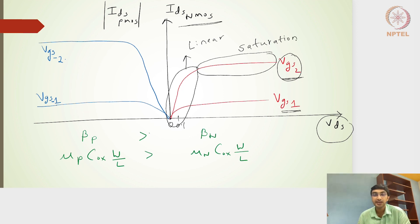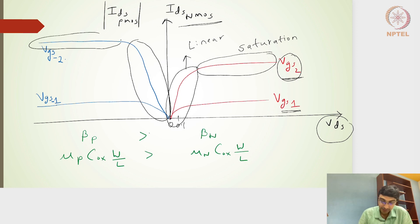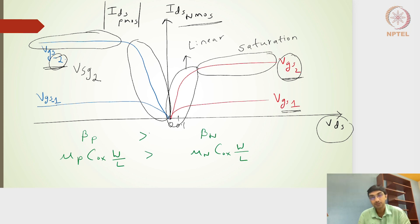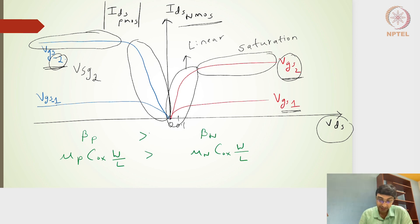For the PMOS transistor similarly, we have a linear region and a saturation region. Note that I have used VGS with a value of minus two volts, which is the same as VSG of positive two volts — the source is always at higher potential than the gate. VGS of minus one volt corresponds to VSG of positive one volt.